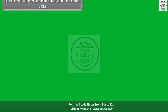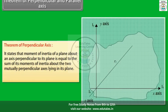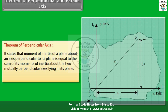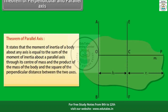The theorem of perpendicular axis states that the moment of inertia of a plane body about an axis perpendicular to its plane is equal to the sum of its moments of inertia about two mutually perpendicular axes lying in its plane: Iz = Ix + Iy. The theorem of parallel axis states that the moment of inertia of a body about any axis equals the moment of inertia about a parallel axis through its center of mass plus the product of the mass and the square of the perpendicular distance between the two axes: I = Icm + mh².